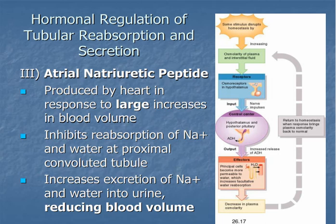Atrial natriuretic peptide or ANP is produced by the walls of the atrium in response to large increases in blood volume, which raise blood pressure. ANP travels through the bloodstream to the kidneys and inhibits reabsorption of sodium and water at the proximal convoluted tubule. Without sodium reabsorption, water reabsorption is also impaired, so more water stays in the tubule and is lost in the urine. ANP thus works opposite to ADH — ADH conserves water and keeps it in blood, whereas ANP removes excess fluid by losing it in urine.